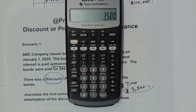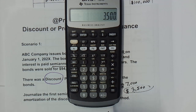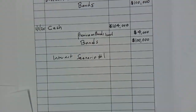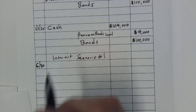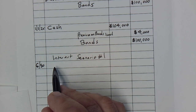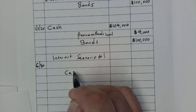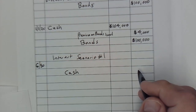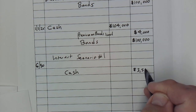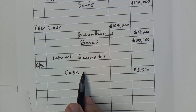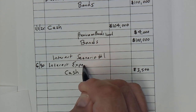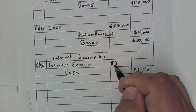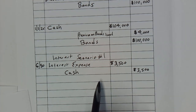Let's record that interest expense for scenario one on 6/30. We're reducing our cash because we're paying it out, so we credit cash for $3,500. Our debit will be to interest expense for that same amount of $3,500. That records the interest payment, and you would continue on each interest payment the same way.